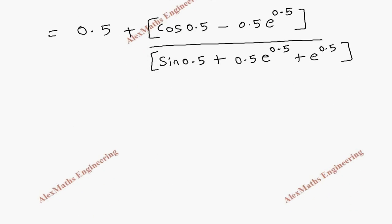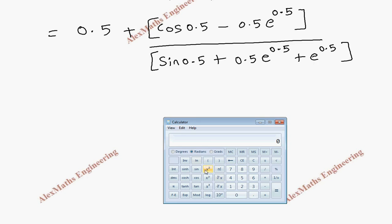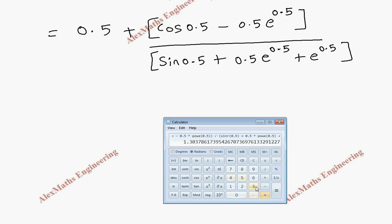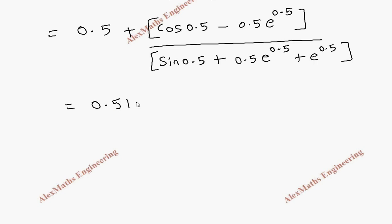Using the calculator in radian mode, the numerator is cos(0.5) - 0.5·e^0.5, and the denominator is sin(0.5) + 0.5·e^0.5 + e^0.5. Adding 0.5, the result is 0.51802, which rounds to 0.5180. So x1 = 0.5180.